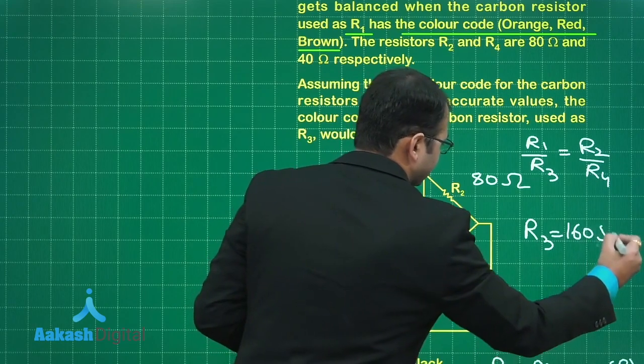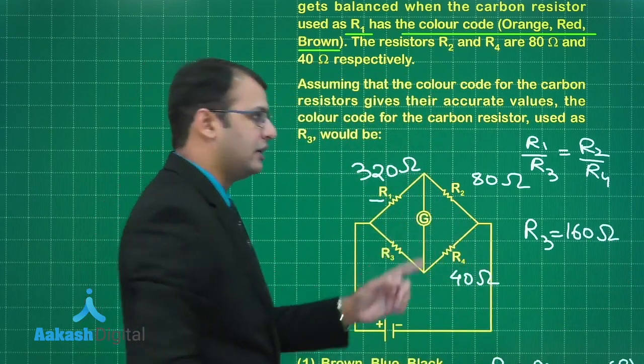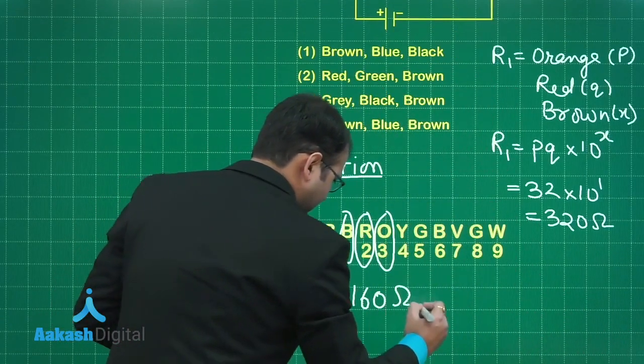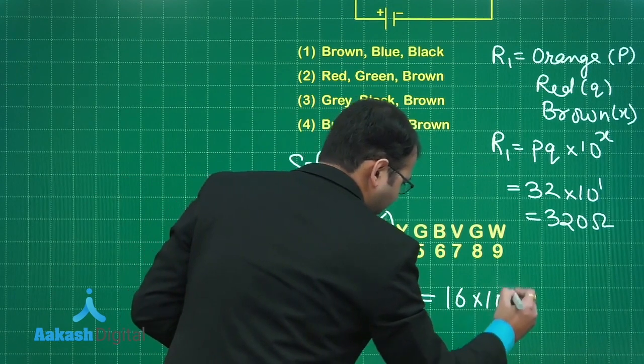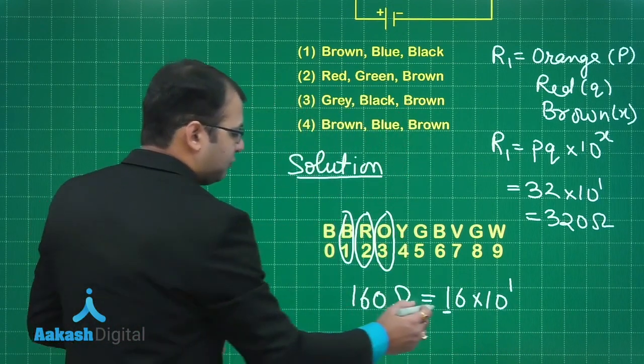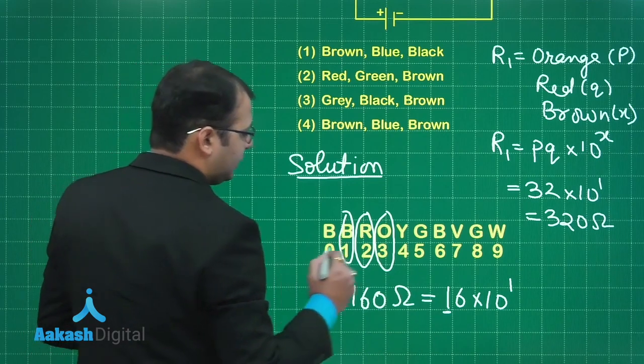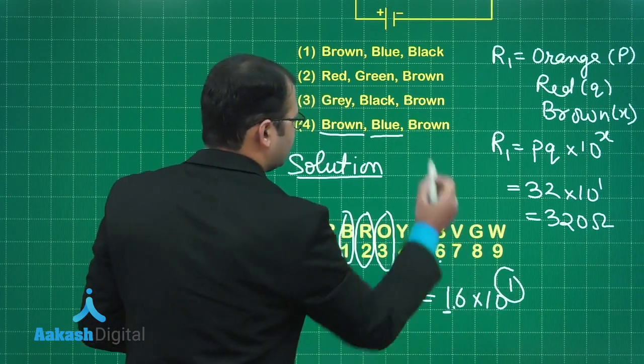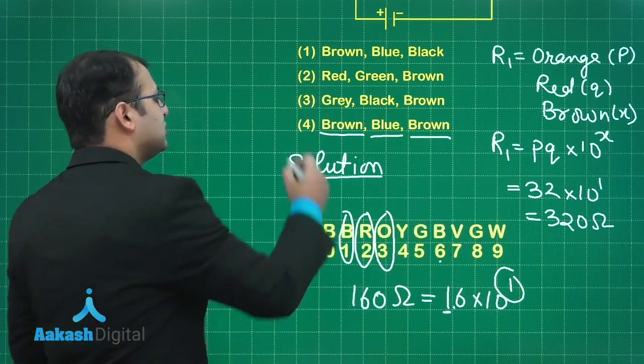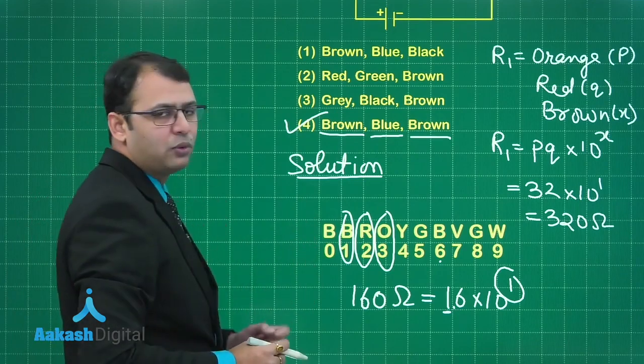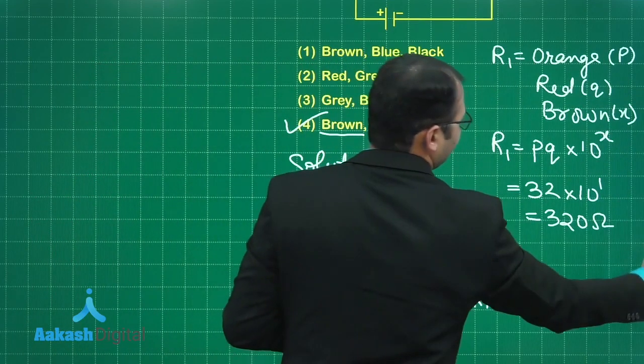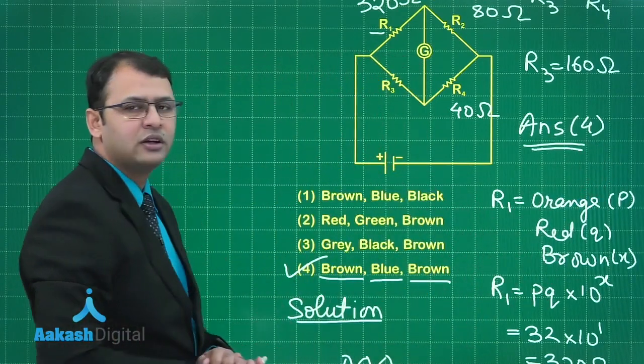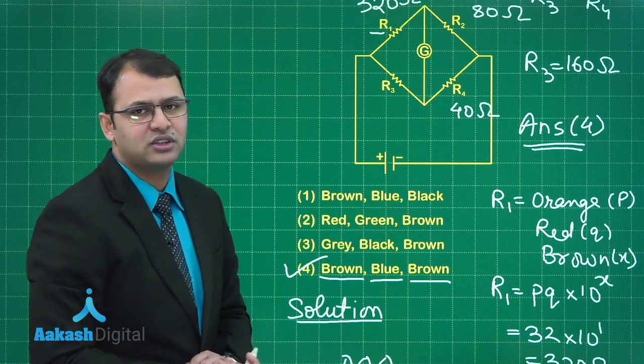With 160 ohm what would be the color? Let's write 160, that means this can be represented as 16 into 10 to power 1. This for R3: 1 means first color would be brown, 6 is blue, and again 1 means brown. So as far as four options are concerned, option number 4 would be the answer to this question. Let's move ahead and see your next question.